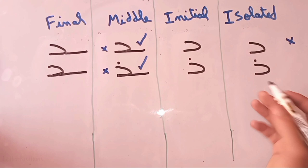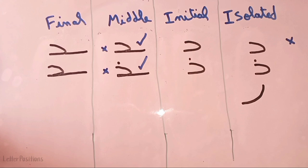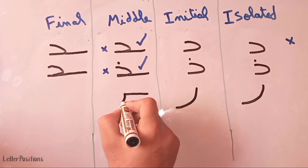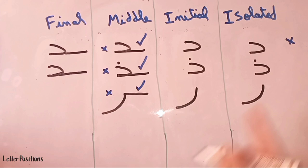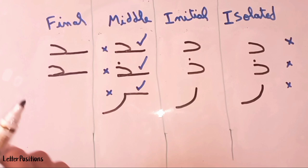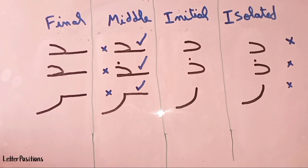The next letter is harfu al-ra'. This is the isolated form — same as the initial form. In the middle form, we start a straight line and go up. Al-ra' and al-dhal can be connected with the right side but cannot be connected with letters on the left side. The final form has the same shape as the middle form.